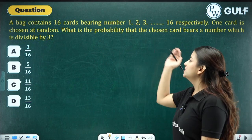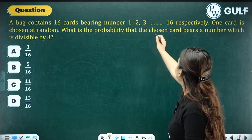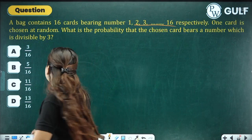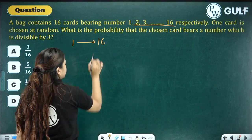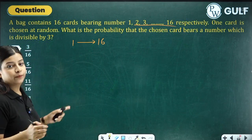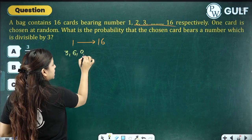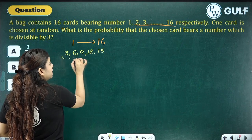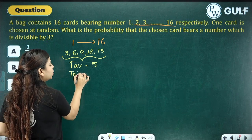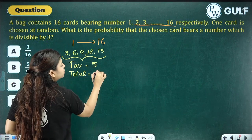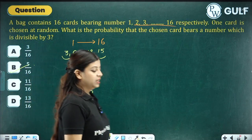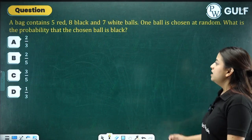A bag contains 16 cards bearing numbers 1 to 16. One card is chosen at random. What is the probability the number is divisible by 3? From 1 to 16, the numbers divisible by 3 are: 3, 6, 9, 12, and 15 — that is 5 favourable outcomes. Total outcomes = 16. Probability = 5/16.